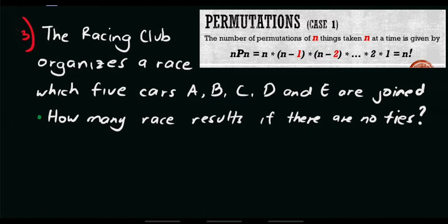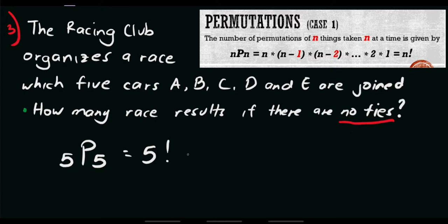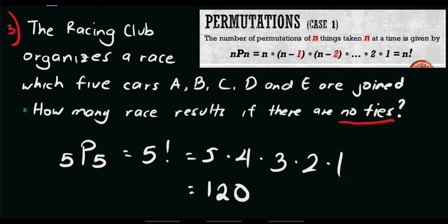Next, for item number 3, let's try to answer a word problem. Suppose the racing club organizes a race in which 5 cars — A, B, C, D, and E — are joined. The question is: how many race results are there if there are no ties? As you observe, since there are no ties, the number of possible race results is the same as the number of permutations of 5 things taken 5 at a time. So we will use 5P5, which equals 5 factorial, which is 5 times 4 times 3 times 2 times 1, equals 120. Therefore, we have 120 possible race results if there are no ties.